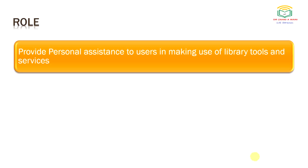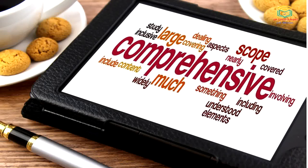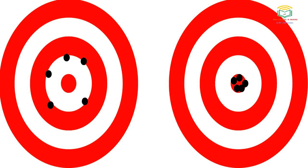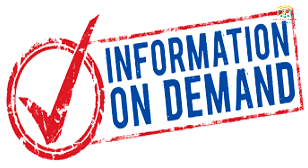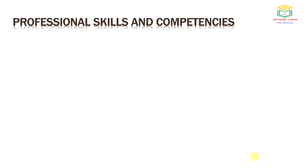The reference librarian provides information promptly, pinpointedly, exhaustively, and accurately to any member of the parent organization. He or she provides information on demand or in anticipation of demand. Now, coming to professional skills and competencies, the reference librarian should possess the ability to organize and design services to meet the needs of the primary community.